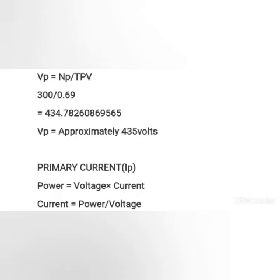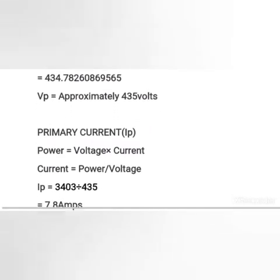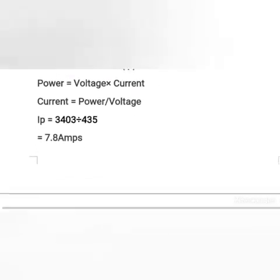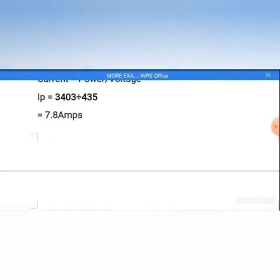For the primary current, we know that power equals voltage times current, so current equals power over voltage. Substituting our values gives us 7.8 amps. This is the maximum current required to flow through our primary winding. The next thing is to find the suitable size of wire that can withstand 7.8 amps, so we consult our SWG table and look for 7.8 amps.